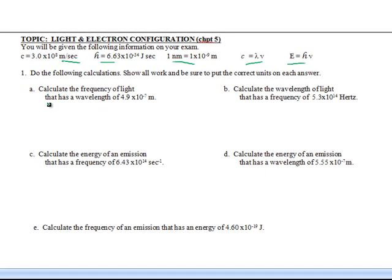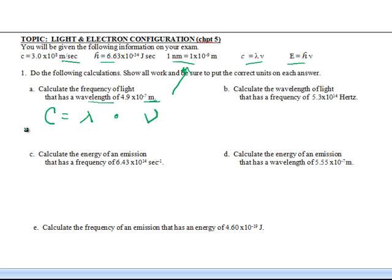Calculate the frequency of light that has a wavelength of 4.9×10⁻⁷ meters. Just make sure it's in meters - if it's in nanometers, you've got to convert it to meters. But this one's in meters, so it's going to be pretty easy. We have to figure out which formula to use. We've got frequency and wavelength, so we're going to use the speed of light formula. Write down the formula: speed of light equals wavelength times frequency, and then underneath each letter put your number until it looks like a basic algebra 1 problem.